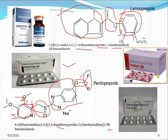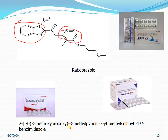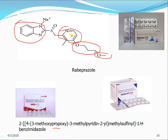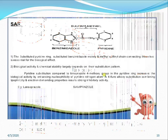Rabeprazole: it contains benzimidazole and pyridine as the basic nucleus. The pyridine is substituted at position 4 with a 3-methoxypropoxy group — methoxy-CH₂CH₂CH₂-O — and a methyl at position 3. The benzimidazole position 2 is substituted with a methanesulfinyl group. These are the marketed products of rabeprazole.